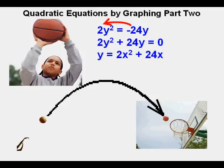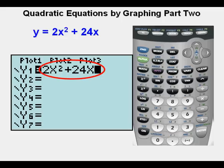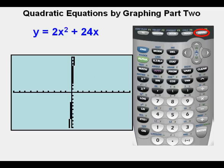He places the function here in y1, so he has 2x squared plus 24x. He graphs by pressing graph or zoom 6.